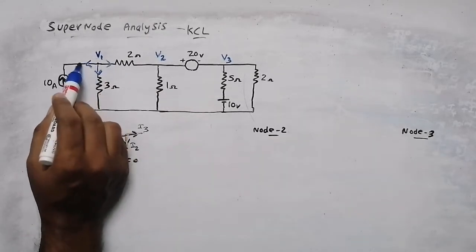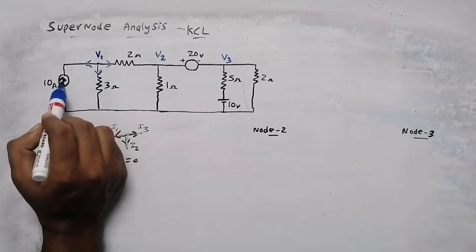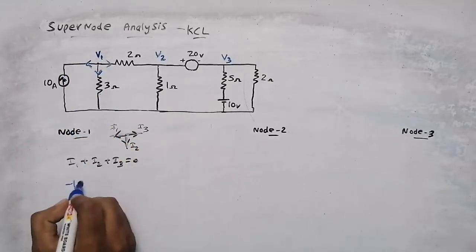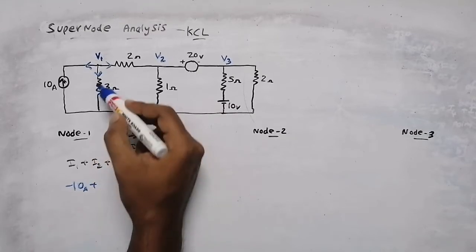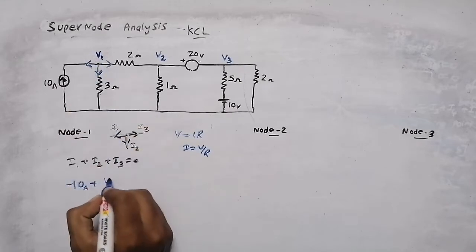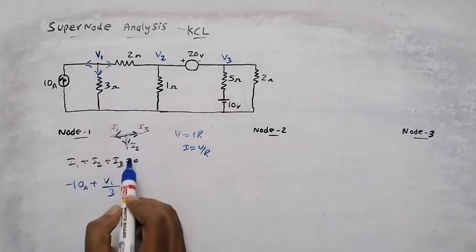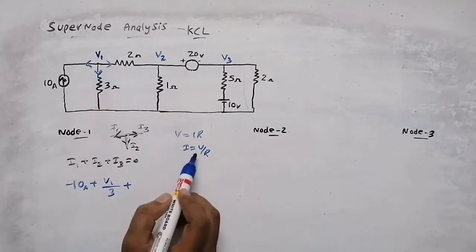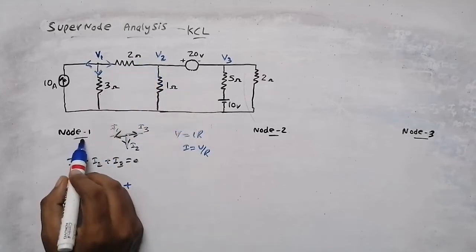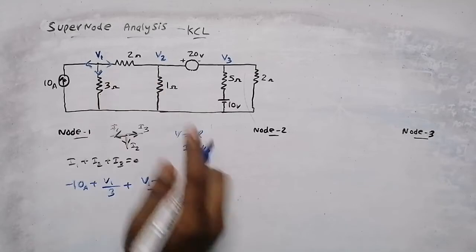I1 is the current flowing through this branch, but there is a current source here whose direction is opposite to our assumed direction, so we write negative 10A. For I2, using Ohm's law, I = V/R, that gives V1/3. For I3, this 2-ohm resistor is common to both nodes, and we are writing the node equation with respect to Node 1, so we write (V1 − V2)/2. That equals zero.